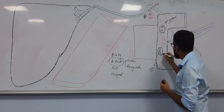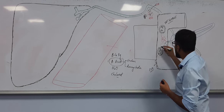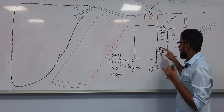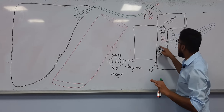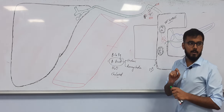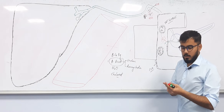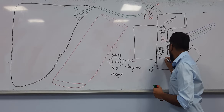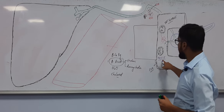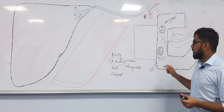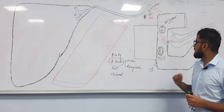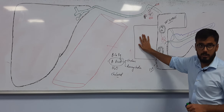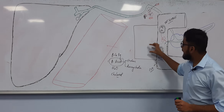Surrounding the free fatty acids, monoacylglycerol, and cholesterol, you have bile acids. This entire unit — free fatty acids plus monoacylglycerol plus cholesterol surrounded by bile acids — is called a micelle. The micelle is a very small, tiny molecule that can easily pass into the enterocyte.